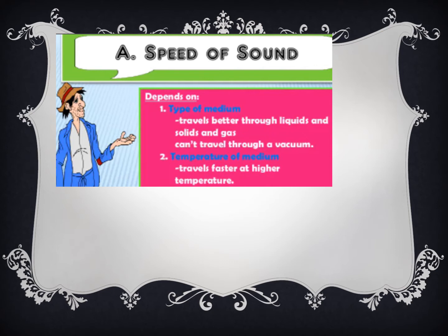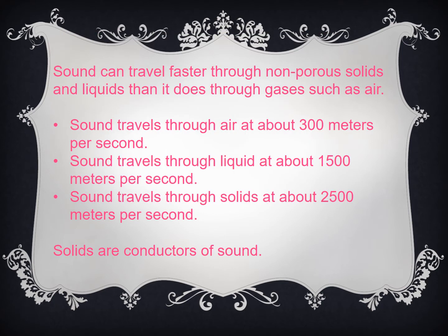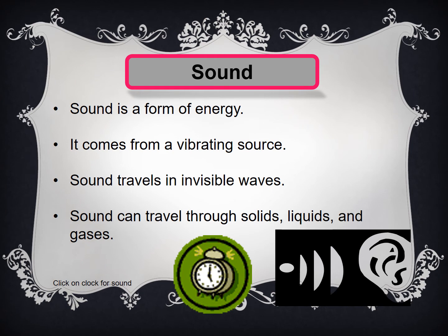The type of medium determines how fast sound travels. Sound travels fastest in solids, then liquids, and then gases. Sound travels through air at about 300 meters per second, through liquids at about 1500 meters per second, and through solids at about 2500 meters per second.